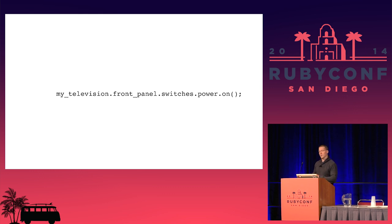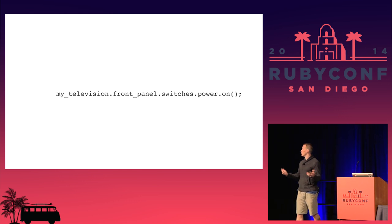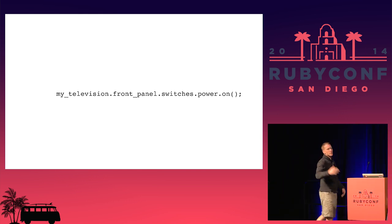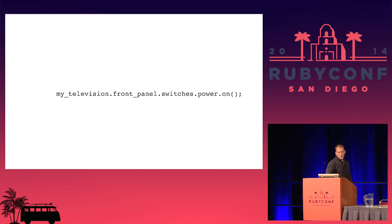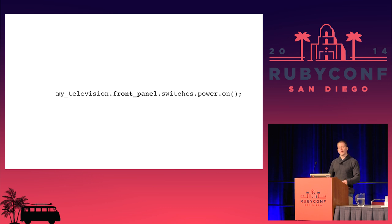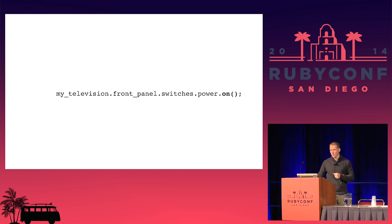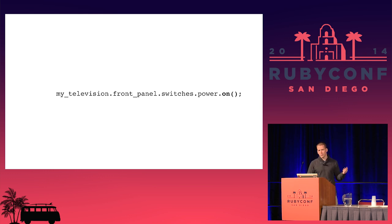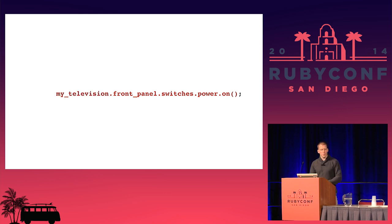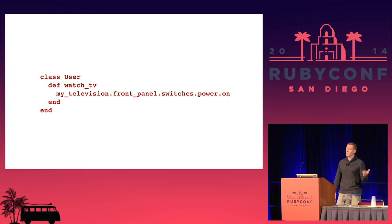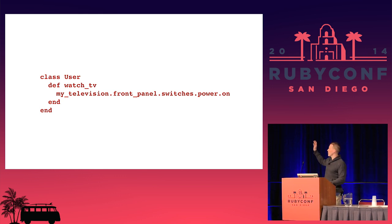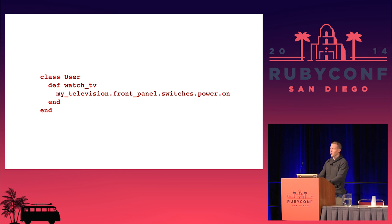Andy and Dave's sample code: imagine programming a television and trying to turn it on. You've got the TV with a front panel — you get from the switches the power button and turn it on. But what happens when how 'on' works changes? You decide you want to make it toggle. That breaking change goes back through the power button — switches won't work, front panel won't work, my television won't work, and the code that calls this is broken.